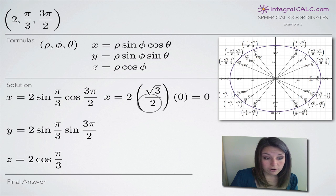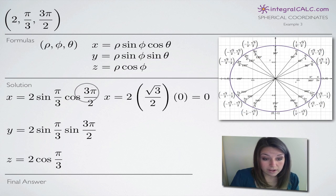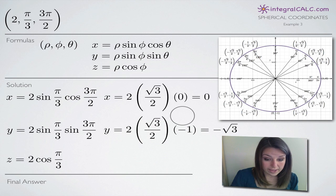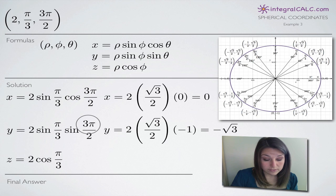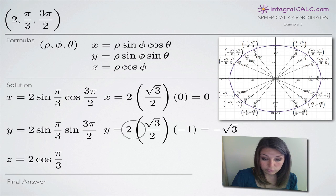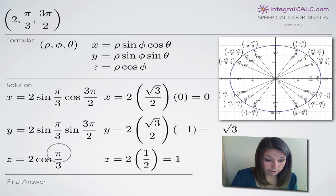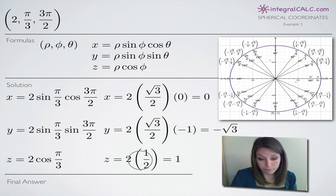Bringing in the values we found from the unit circle: sine of pi over 3 is the square root of 3 over 2, and the cosine of 3 pi over 2 is 0. So when we multiply 2 by the square root of 3 over 2 by 0, we get 0 for x. For y, the sine of pi over 3 is the square root of 3 over 2, and the sine of 3 pi over 2 is negative 1. When we multiply those together, the 2's cancel and we're left with simply negative square root of 3. For z, cosine of pi over 3 is 1/2, so we multiply 1/2 by 2 and we get 1.